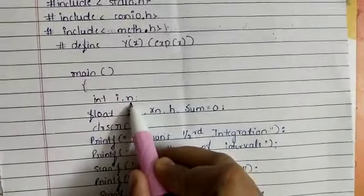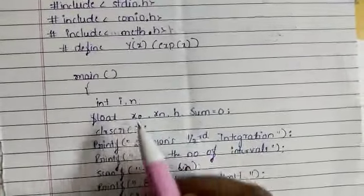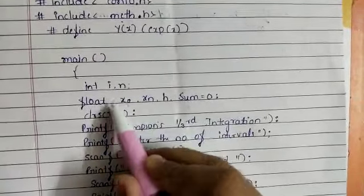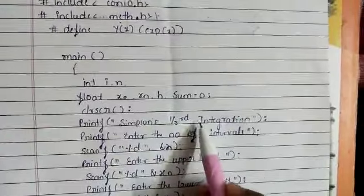Here i and n are variables of data type int, and here x0, xn, h, and sum are variables of float data type. Here the user is asked for input.